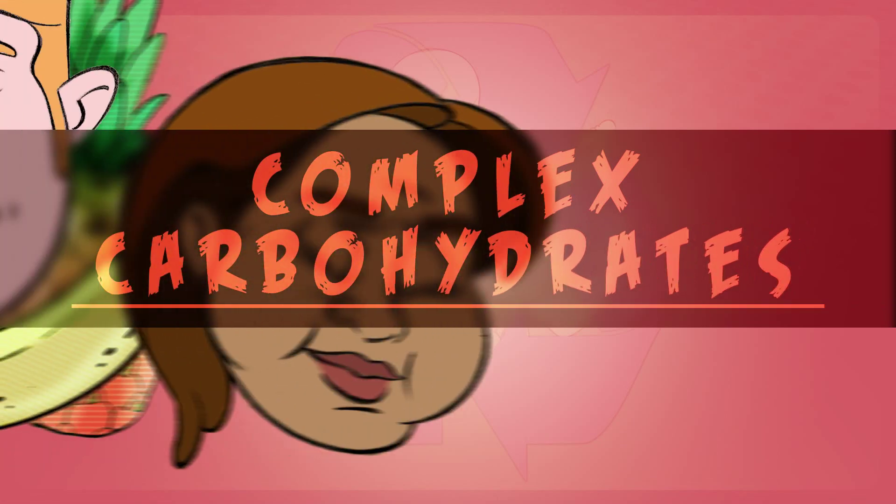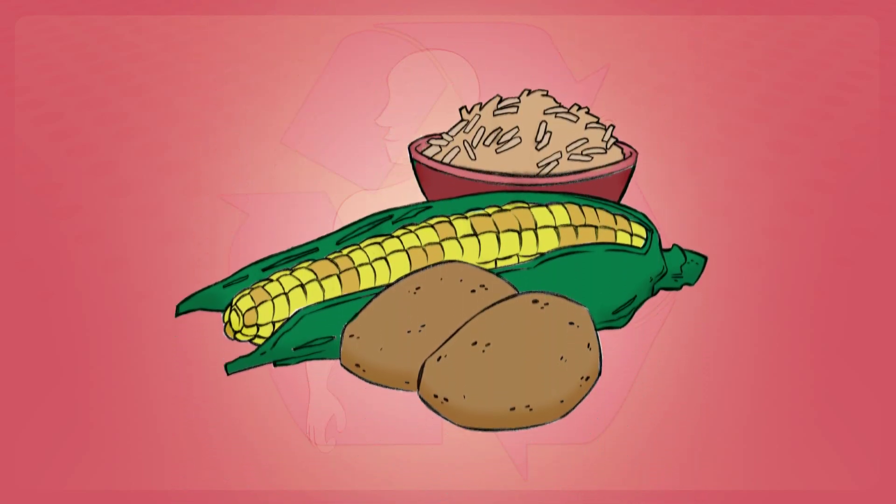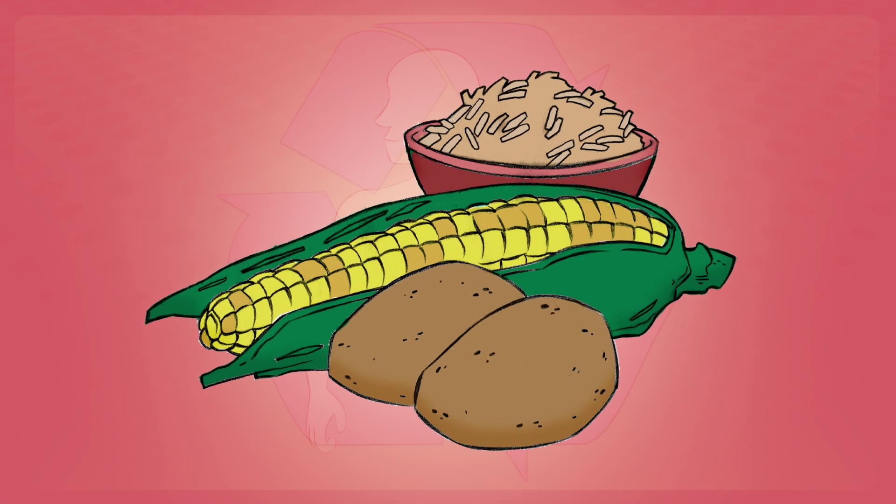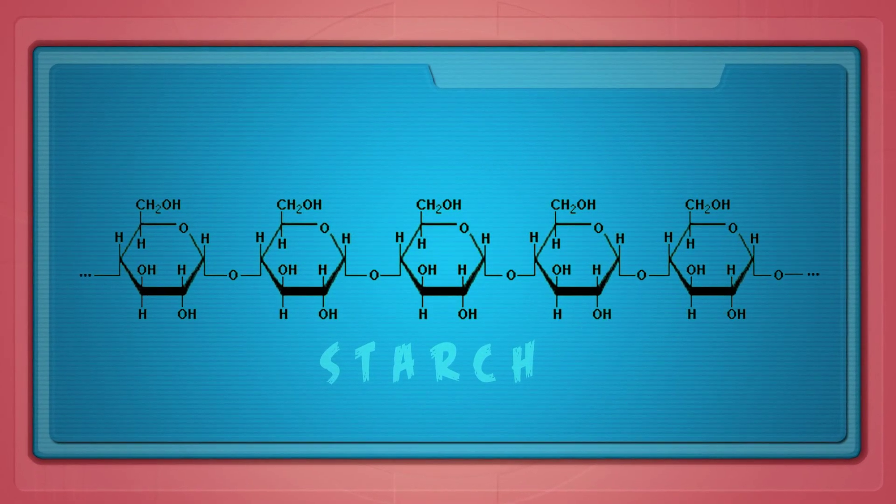Complex carbohydrates are found in fruits and vegetables, whole grains, bread, pasta, and dairy products. Starch is an example of a complex carbohydrate. It's commonly found in potatoes, corn, and rice. Starch consists of thousands of individual glucose molecules bonded together.